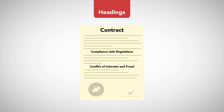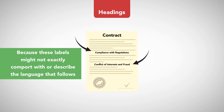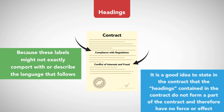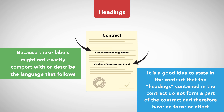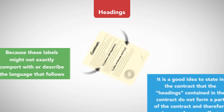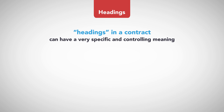Headings. For convenience of reference, most longer contracts contain a label preceding each major section of the contract and a label for each specific topic at the place where that topic begins to be addressed. Because these labels might not exactly comport with or describe the language that follows, it is a good idea to state in the contract that the headings contained in the contract do not form a part of the contract and therefore have no force or effect. On the other hand, headings in a contract can have a very specific and controlling meaning.